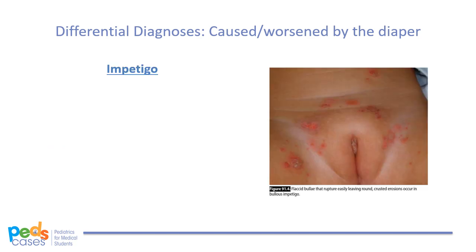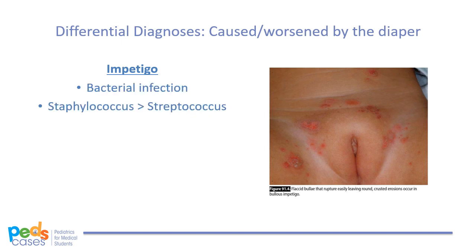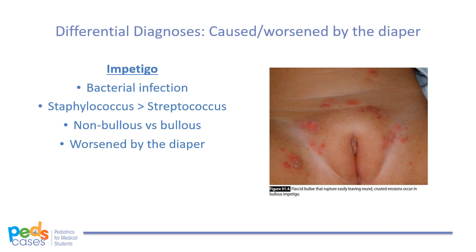Number three, impetigo, is a bacterial infection in the skin most commonly due to Staphylococcus and less commonly due to Streptococcus. Non-bullous impetigo presents initially as a superficial vesicle that ruptures easily to form a honey-crusted lesion. Bullous impetigo presents initially as a fluid- or pus-filled bulla that ruptures to form an erythematous erosion with surrounding scaling. We think of these lesions as both caused and worsened by the diaper. When assessing a child with vesicles, especially in the neonatal period, be sure to consider Herpes Simplex Virus, or HSV. The lesions of HSV are distinct clinically, but neonatal HSV is not an infection you want to miss, so look carefully.